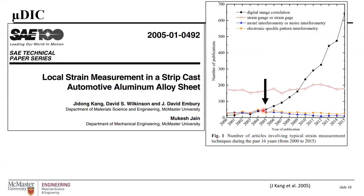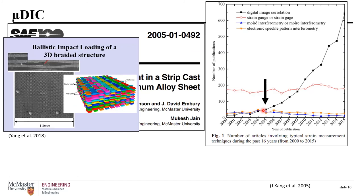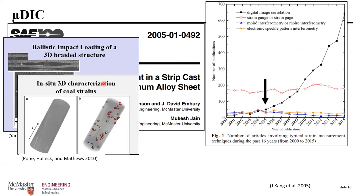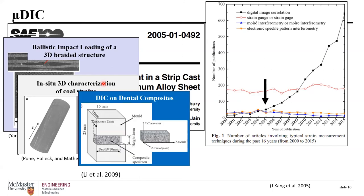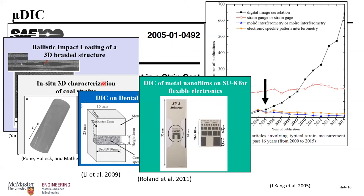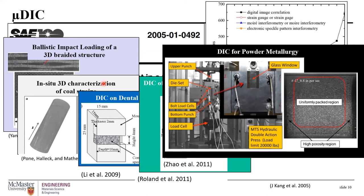This work was also in collaboration with Dr. David Embury and Dr. Mokesh Jain. Since then, DIC has been applied to various industries — studying ballistic impact loading of a 3D CFRP braided structure, 3D strain characterization of coal in geology, polymer shrinkage in dental composites in biomedical applications, and metal nano films for flexible electronics, among others. There is also a setup at CANC to look at the compaction of powders in the powder metallurgical field.